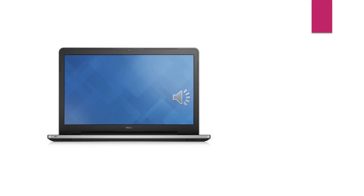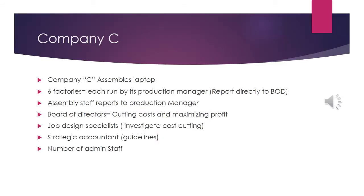To understand these building blocks more clearly, let's look at a scenario. There is a company called Company C which assembles laptops. It has six factories, each run by its own production manager, and each production manager reports to the board of directors. There is also assembly staff which reports to the production managers.